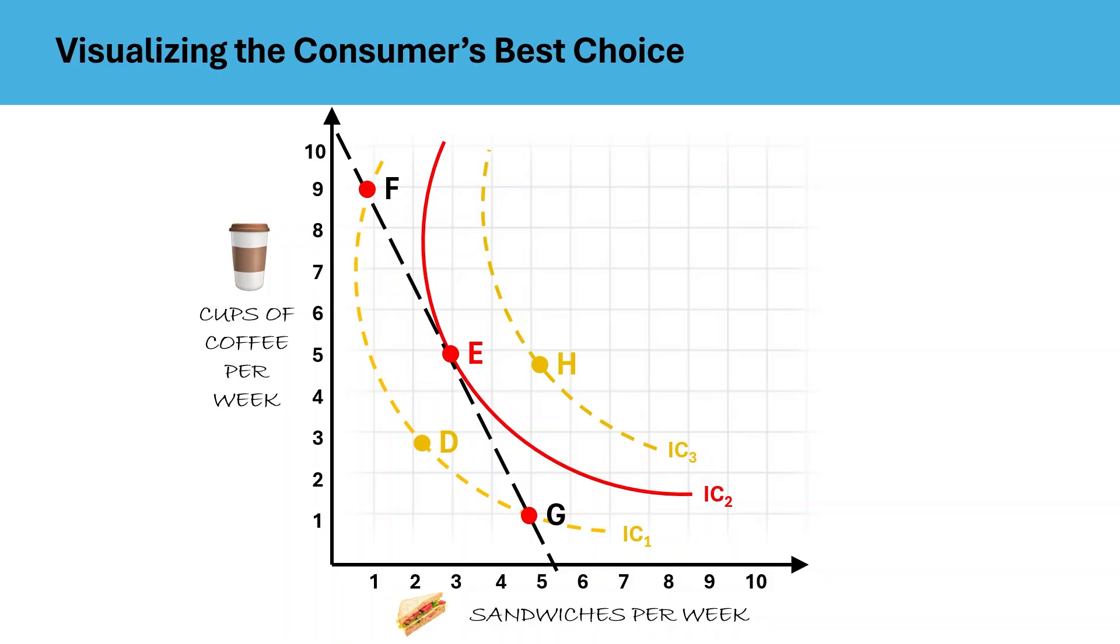Therefore, the best combination out of all these points is point E, this point, which lies on the budget line and also on the highest attainable IC. So, this is the consumer's equilibrium, which would give him maximum satisfaction with given income and prices of the two goods. I hope this is clear. This is the key to the whole concept.